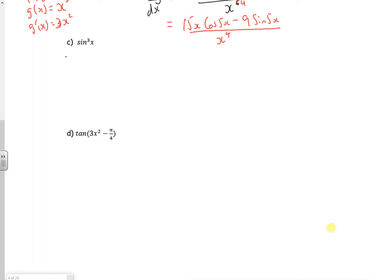It might help you to see this as sine x, all cubed. And now I can use the chain rule on it. So it's power at the front, times by the bracket differentiated, times by the bracket with 1 off the power.